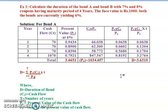For the solution of Bond A, we draw the following columns: cash flow (CT), present value (PV), CT times PV, PV times CT divided by P-naught, and PV times CT divided by P-naught times t. In the year column we write years one through four, since the maturity period is four years.